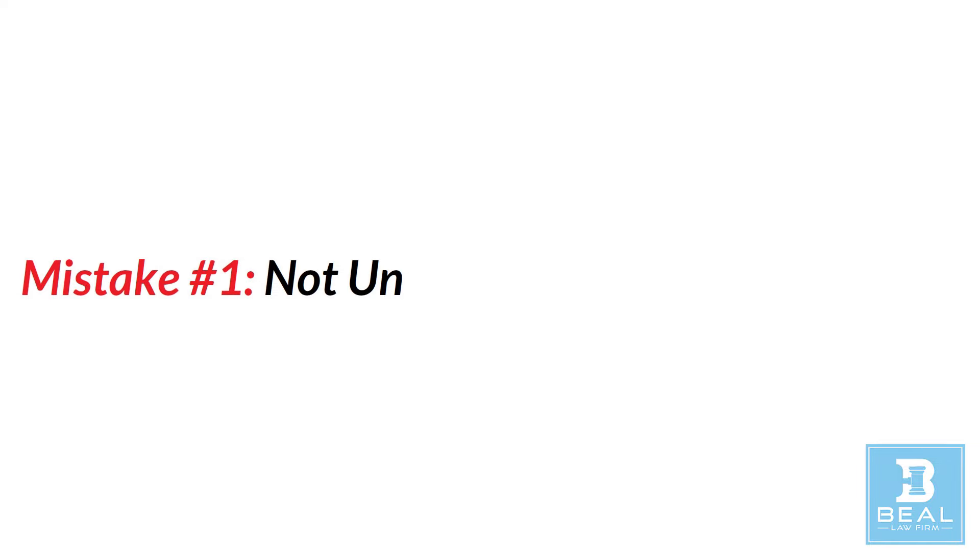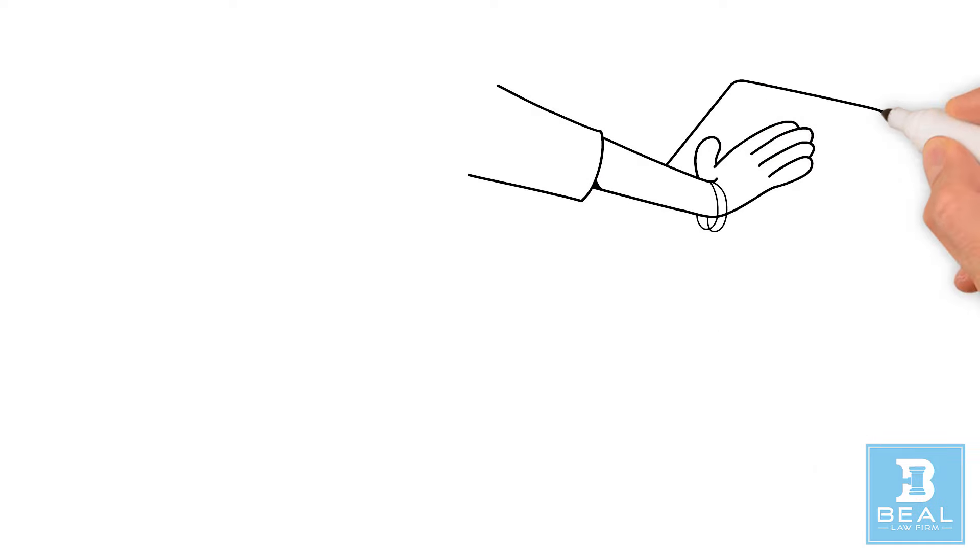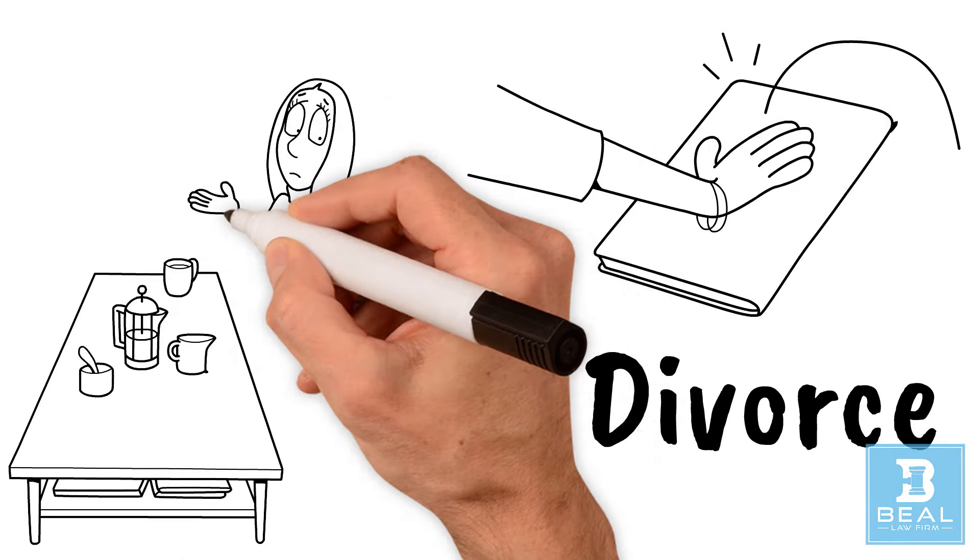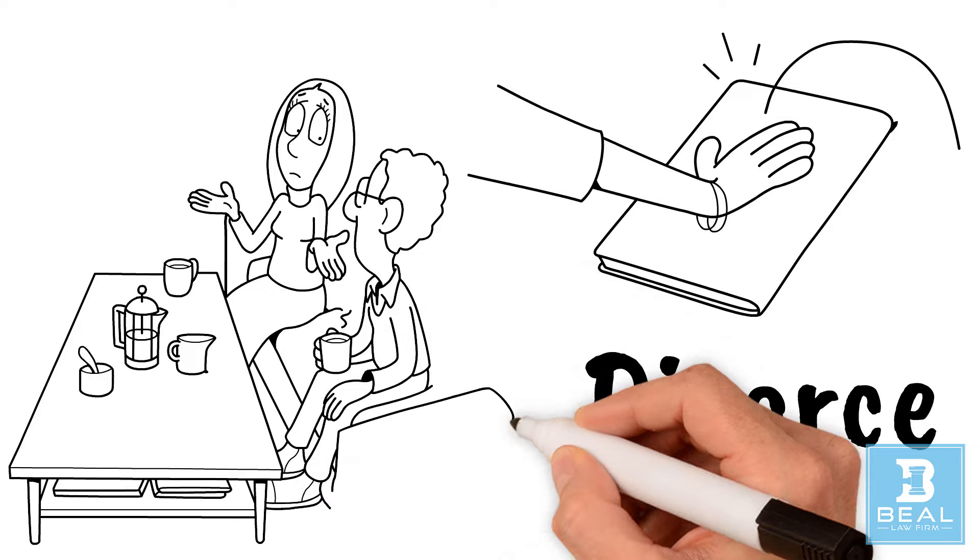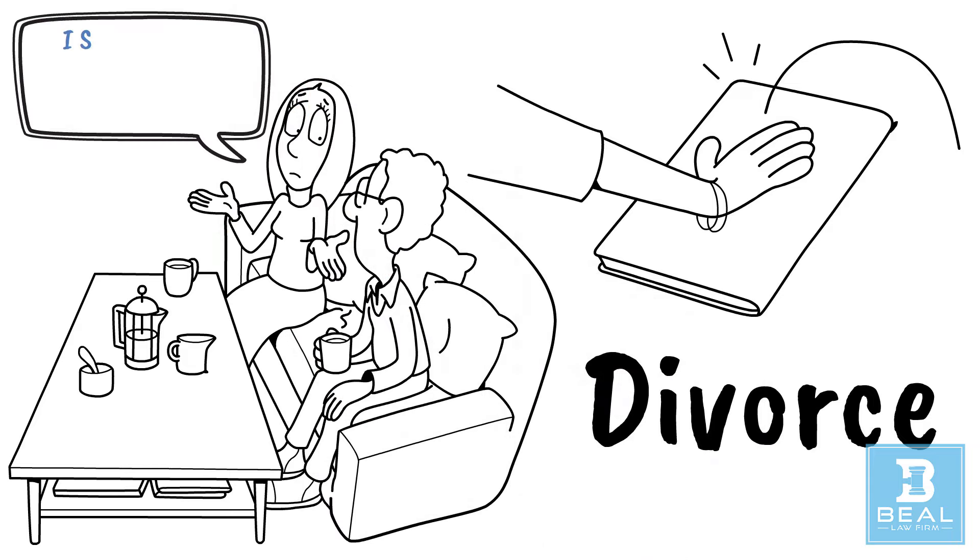Mistake number one – Not Understanding Divorce Code. Often before filing for divorce, one partner might drop hints in a way that feels cryptic. Statements like, I still love you,